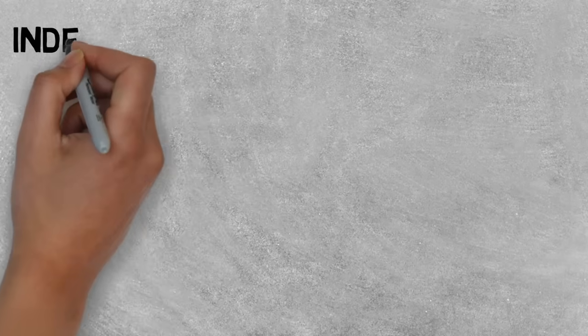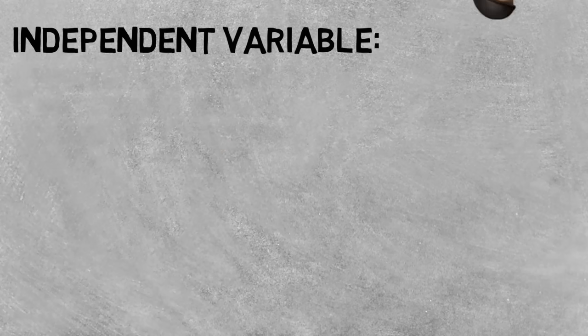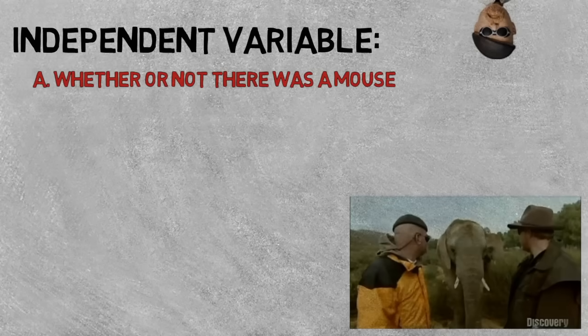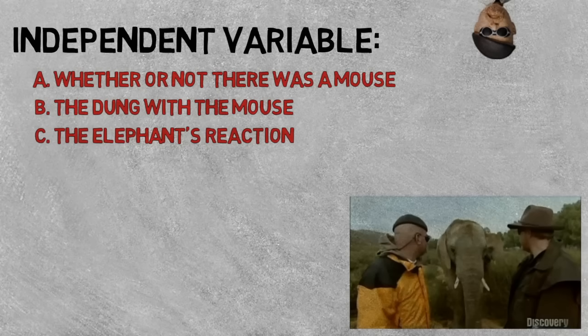Can you identify the independent variable of their experiment? Was it whether or not there was a mouse under the dung, the dung that had the mouse hiding under it, or the elephant's reaction during the experiment?